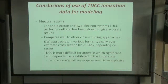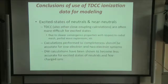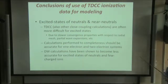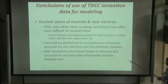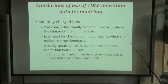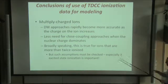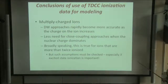Our time-dependent method is more difficult to apply and probably less accurate for systems exhibiting term dependence in the initial state. For excited states, the time-dependent method should be of comparable accuracy, but calculations can be much more difficult — slower convergence, larger radial mesh extent needed, and slower partial wave convergence. Calculations performed to completeness should be quite accurate, and importantly distorted wave methods are less accurate for excited states of neutral systems. For multiply charged ions, distorted wave approaches rapidly become more accurate as the ionic charge increases, with less need for close coupling when the nuclear charge dominates.